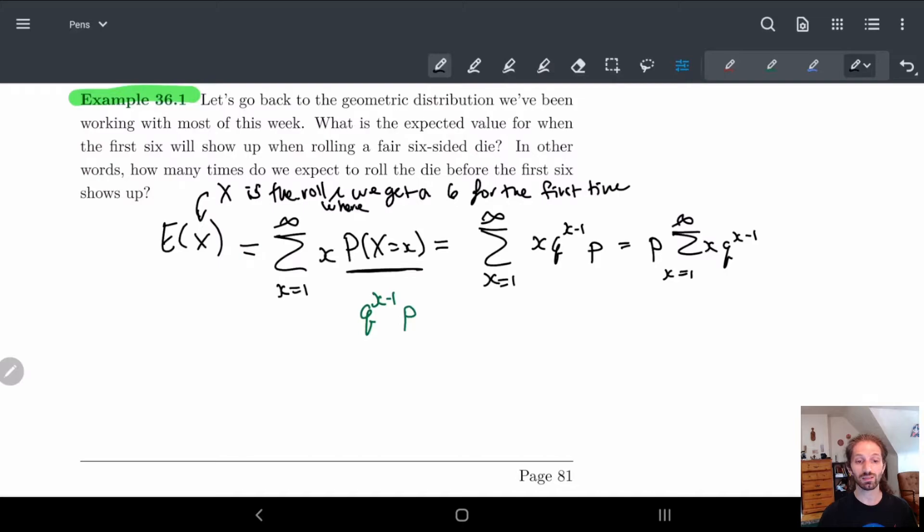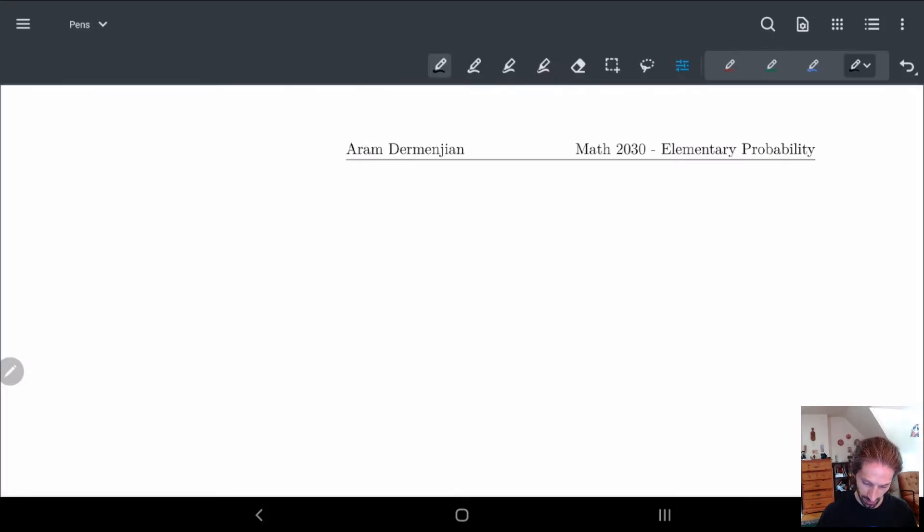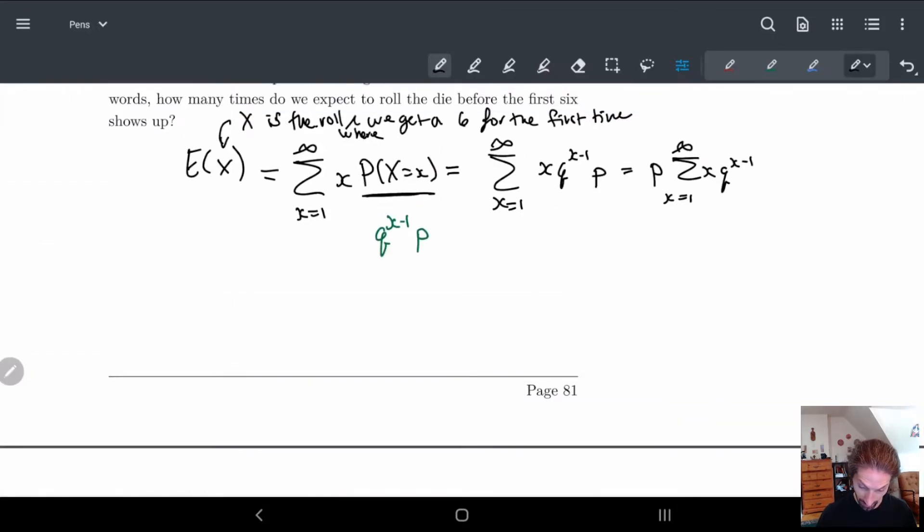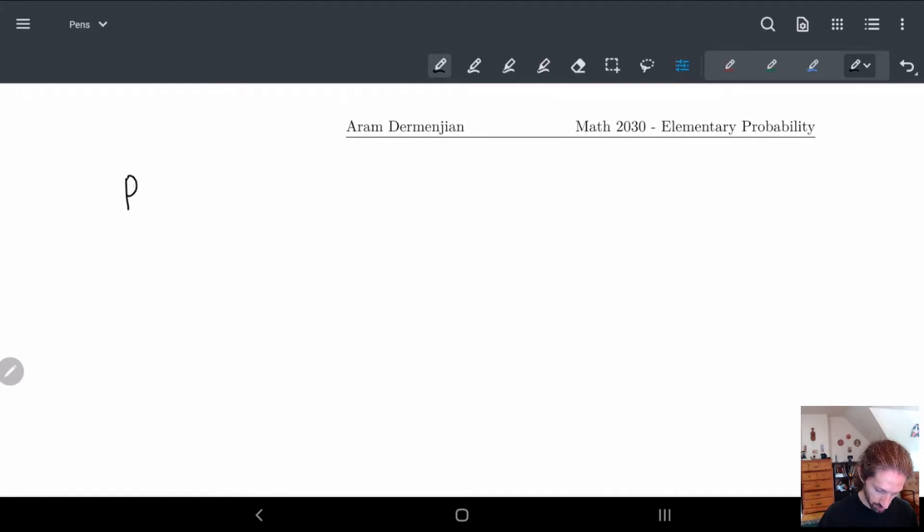And this is basically the formula we need to solve. Now how do we solve this? This is something that is not as easy to do. We'll kind of do this on the next page, so I'll rewrite this out, 1 to infinity of X Q to the X minus 1. So remember the formula we had before...